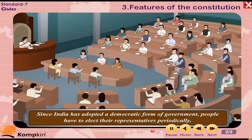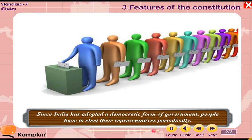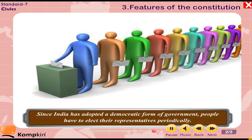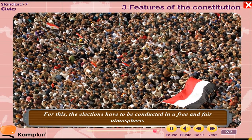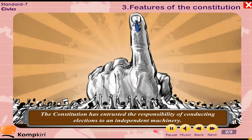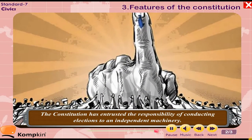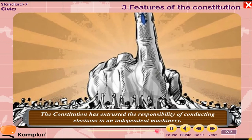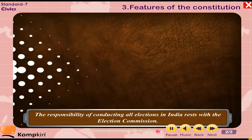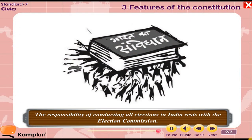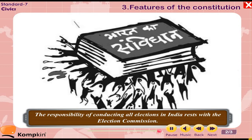Election Commission: Since India has adopted a democratic form of government, people have to elect their representatives periodically. For this, elections have to be conducted in a free and fair atmosphere. The constitution has entrusted the responsibility of conducting elections to independent machinery known as the Election Commission, which is responsible for conducting all elections in India.